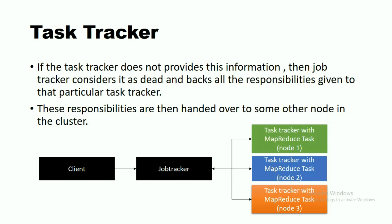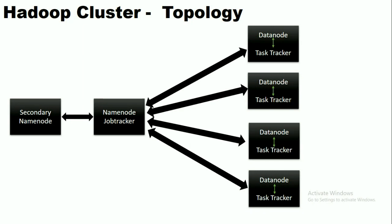These responsibilities are then handed over to some other node in the cluster — either Node 1, Node 2, or Node 3. In the Hadoop cluster topology, we have the Secondary NameNode, NameNode, and JobTracker at the top level, and below that we have four blocks each containing a DataNode and a TaskTracker.